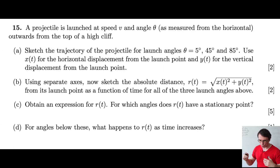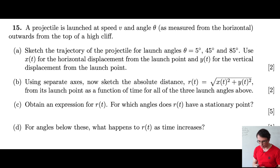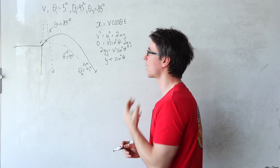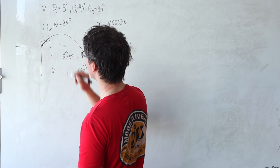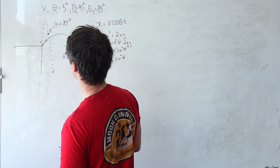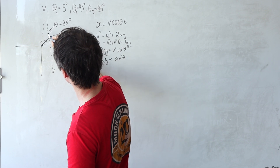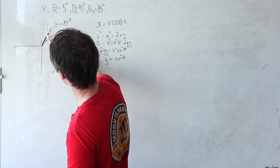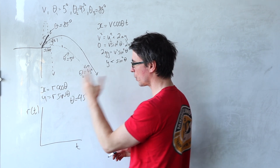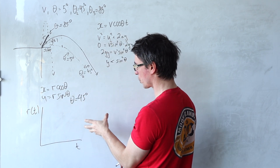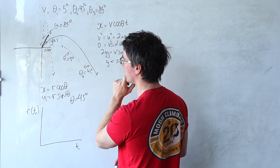For the next part, using separate axes, we sketch the absolute distance r(t) = √(x(t)² + y(t)²). So the absolute distance at any position is that straight-line distance r. We start sketching the displacement r(t) as a function of time, beginning with theta equals 45 degrees.